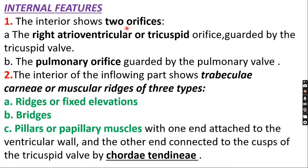The interior of the inflowing part shows trabeculae carneae, or muscular ridges, of three types. The inflowing part is rough because of these muscular ridges — trabeculae carneae. The three types are: ridges (fixed elevations), bridges, and pillars, also known as papillary muscles.